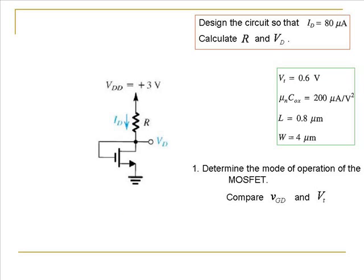To determine the mode of operation of the MOSFET, let us compare VGD and the threshold voltage. VGD equals VG minus VD. From the diagram we can see that VG and VD are the same because the drain and the gate are connected. Therefore VGD equals 0, which is less than the threshold voltage given to be 0.6 volts. Therefore our circuit is operating in the saturation mode.